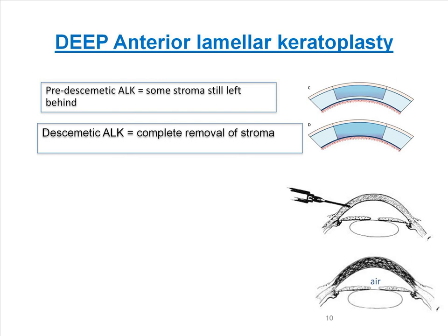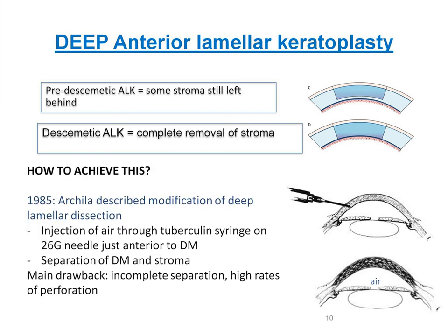Deep anterior lamellar keratoplasty, or DALK, can be considered as pre-Descemet's, in which some stroma is left behind, or Descemet's, in which the stroma is completely removed. In 1985, Achille described a modification of deep lamellar dissection in which air was injected on a 26-gauge needle just anterior to the Descemet's membrane to achieve separation between the Descemet's and the stroma. Although successful in some cases, this was associated with incomplete separation and high rates of perforation.